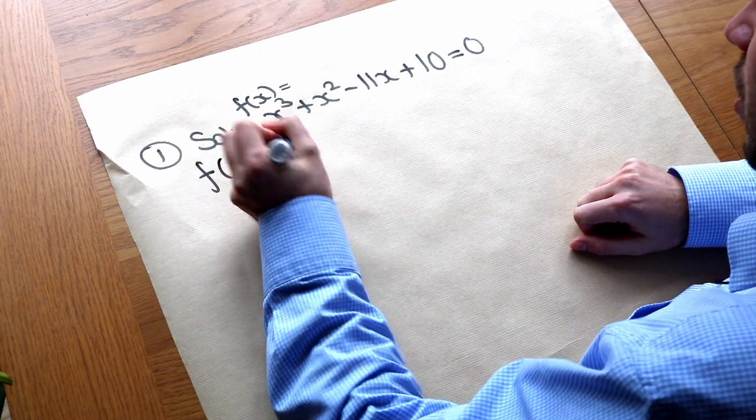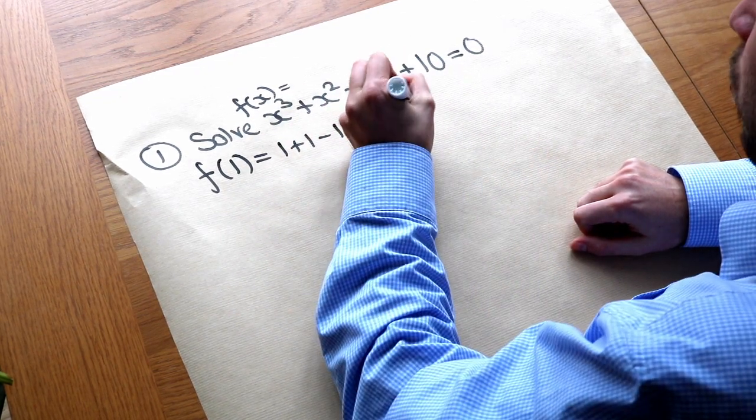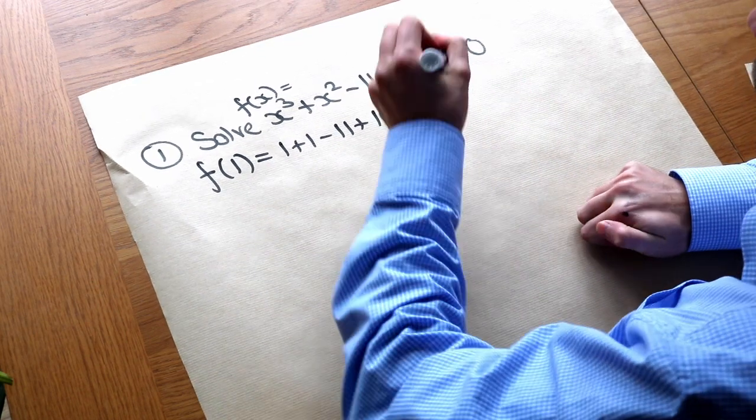So I tend to try one first. That gives you one plus one minus eleven plus ten. And that gives you one which is not zero. So that didn't work.